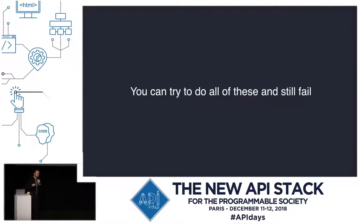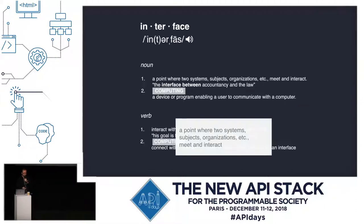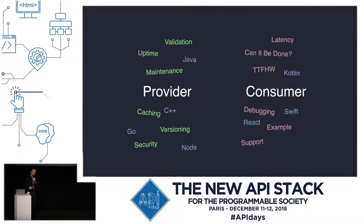You can go through all the motions of usability studies and thinking about the API as fundamentally subjective, and still fail. To think a little deeper about why, let's go back to the other definition of what an interface actually is. In a more generic sense, not just a computing sense, an interface is a point where two systems, subjects, or organizations meet and interact. It's a boundary between two worlds. So what are the two worlds in the API context? It's the person providing the API and the person consuming the API — the server and the client — but ultimately it ends up being two groups of people.